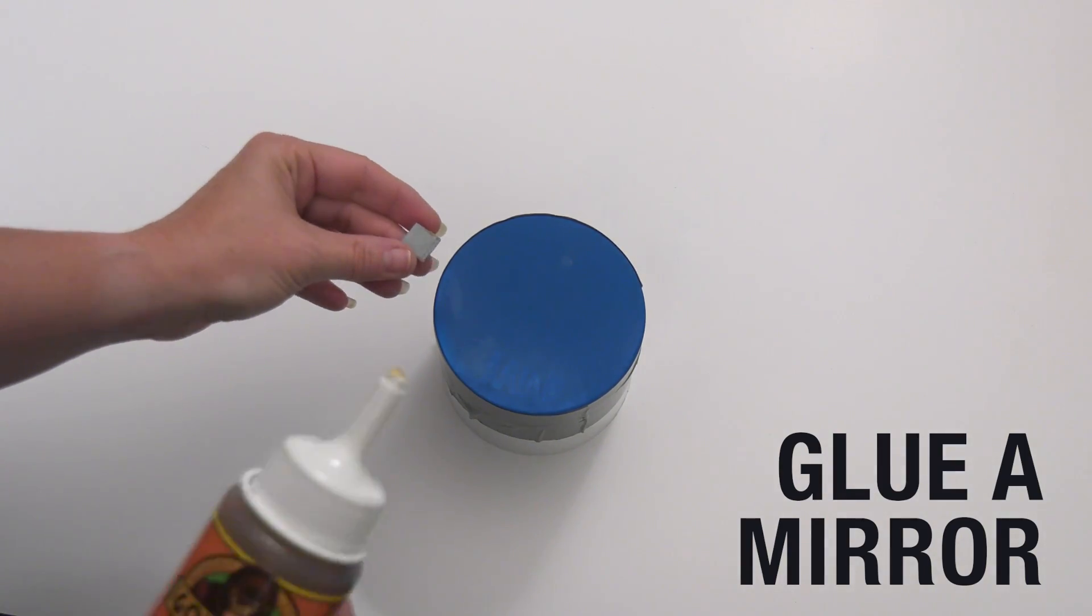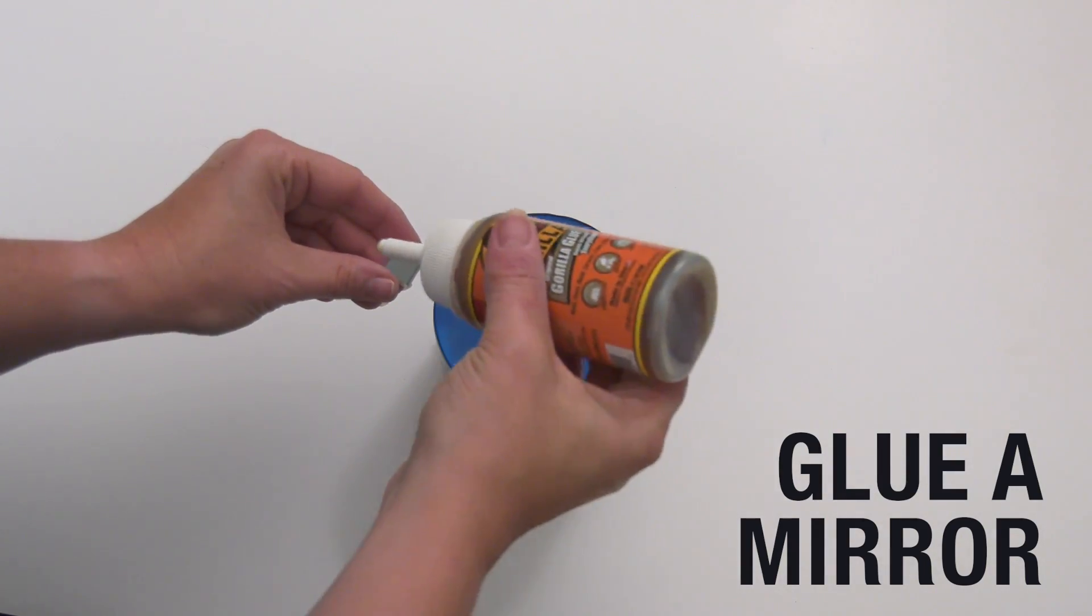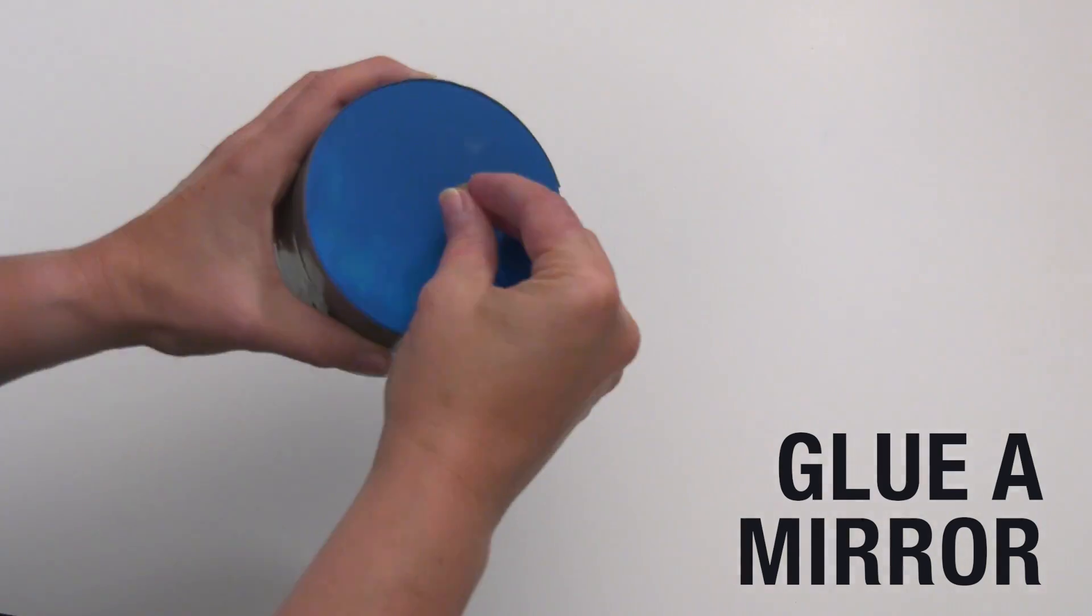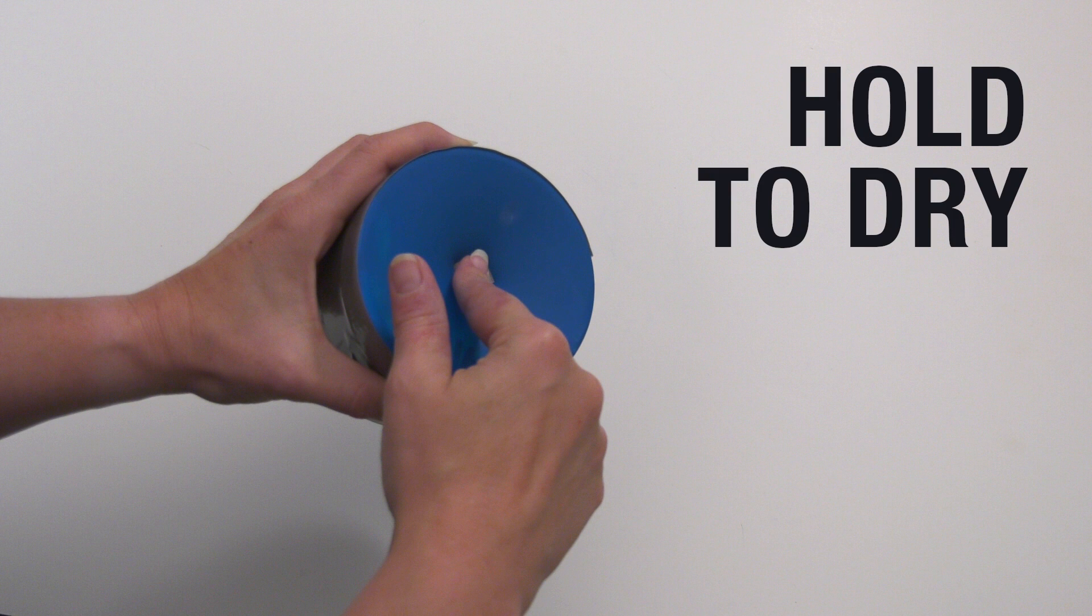Next, glue a small square mirror to the center of the balloon. Hold it firmly for a few seconds to allow the glue to dry before letting it go.